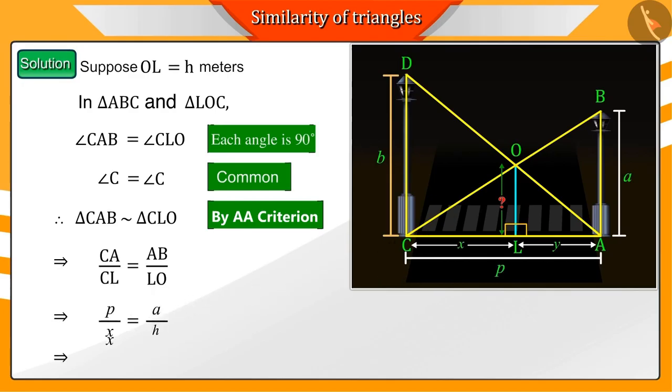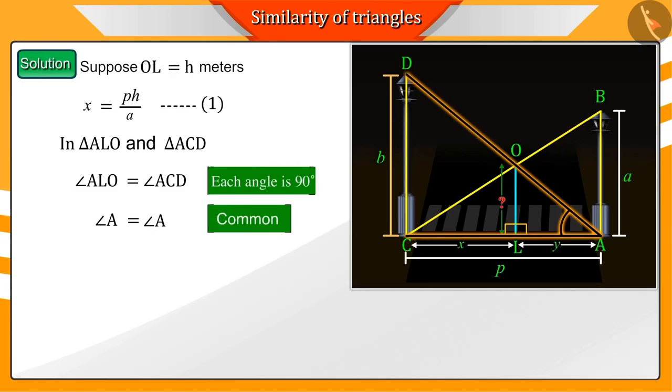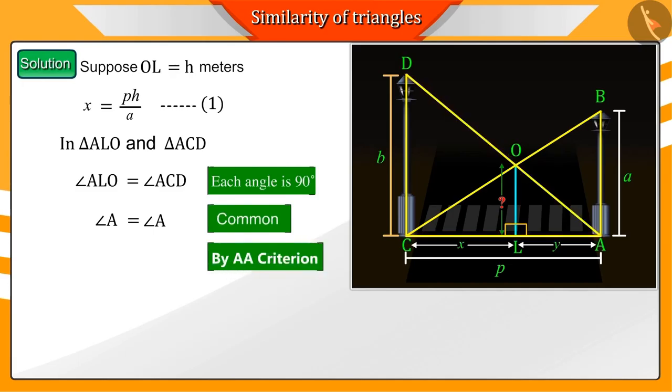Similarly if you look at the triangles ALO and ACD, the corresponding angles ALO and ACD are equal. Also angle A is common in both triangles, thus equal. Hence according to AA criterion the triangles ALO and the triangle ACD are similar.